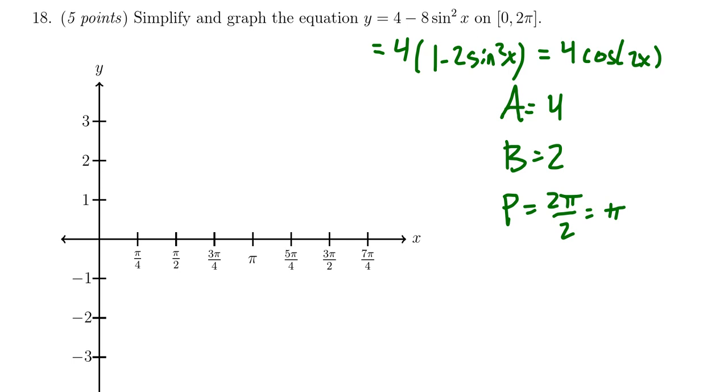Keeping that in mind, our amplitude is 4, cosine starts at its maximum with no reflection, and then it finishes a single period at π.